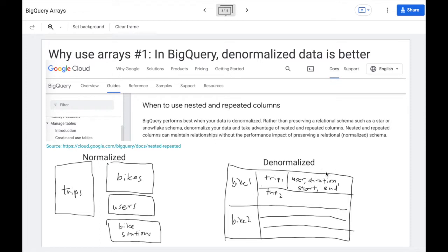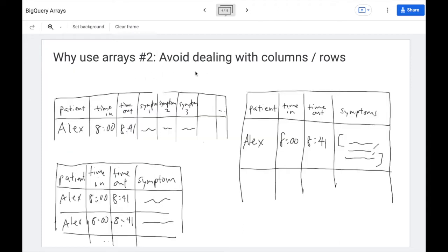And so that's why denormalized is better. And you'll soon realize that arrays provide a very convenient way to store multiple pieces of information. So the second reason to use arrays is to avoid dealing with multiple columns or rows.